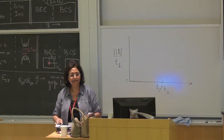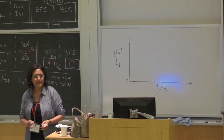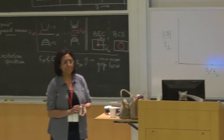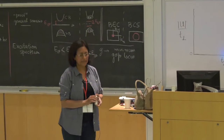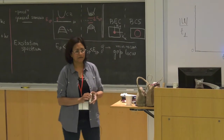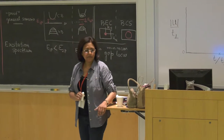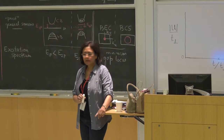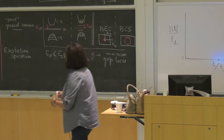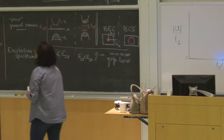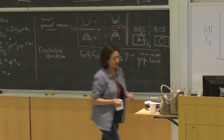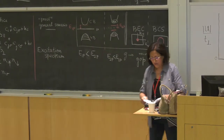There is spin degeneracy and also the layer degree of freedom? Yes. And your attraction is on-site, on both layers. Okay, so now let me discuss different limits.